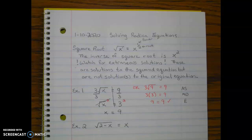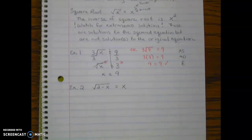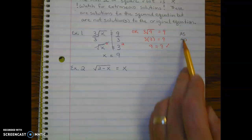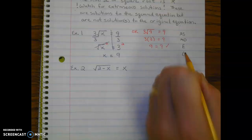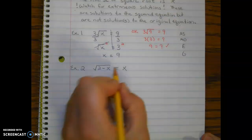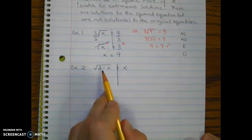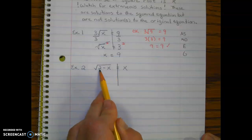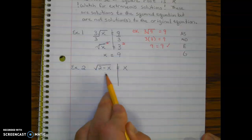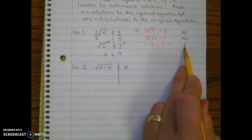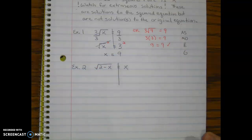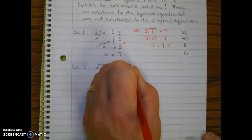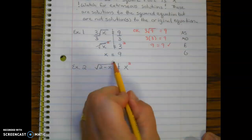Let's look at example number two. Following GEMDAS backwards: the subtraction is inside the grouping symbol, so we skip that. There's nothing being multiplied or divided at the outer level, so we go straight to undoing the exponent — we undo the square root by squaring both sides, which cancels the square root.